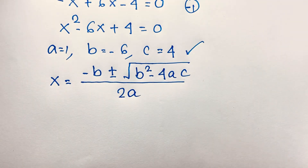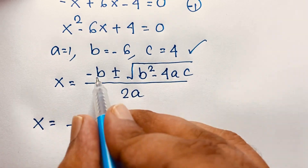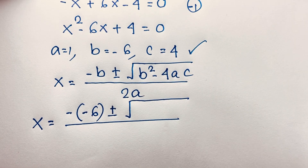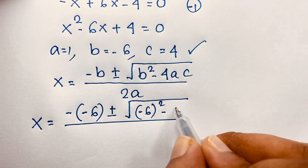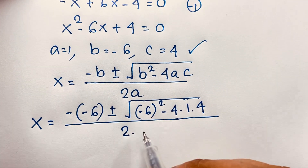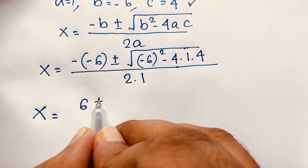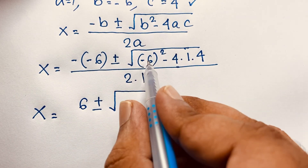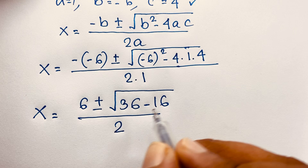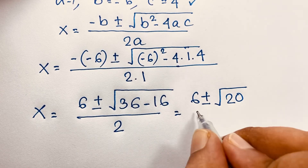Substituting the values, b is negative 6, so x equals positive 6 plus or minus square root of (negative 6) squared minus 4 times 1 times 4, over 2 times 1. Since negative 6 is raised to an even power, it is always positive, giving 36 minus 16, all over 2. So we get 6 plus or minus square root of 20, over 2.